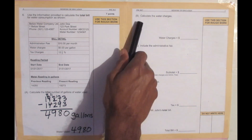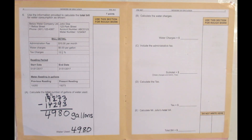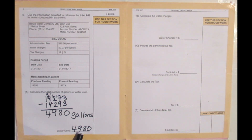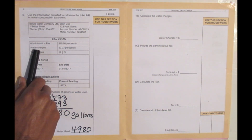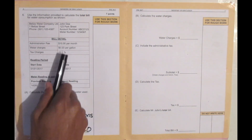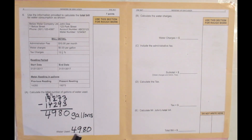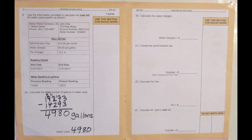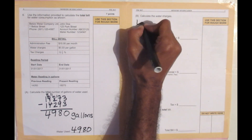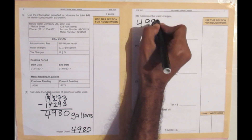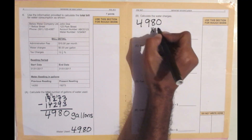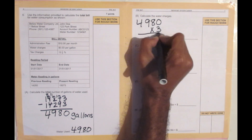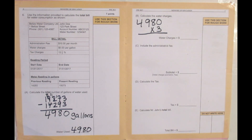Now for part B: calculate the water charges. The person used 4,980 gallons of water, and the bill says it's 3 cents per gallon. So it's 3 cents multiplied by the number of gallons used. We calculate 4,980 multiplied by 3, then move the decimal to two decimal places to get our dollar amount.